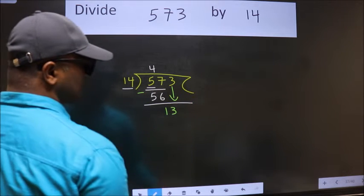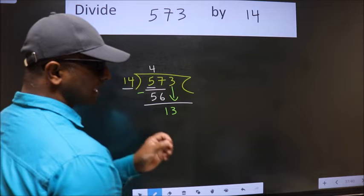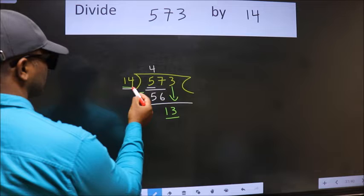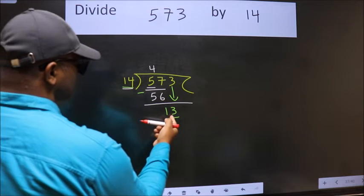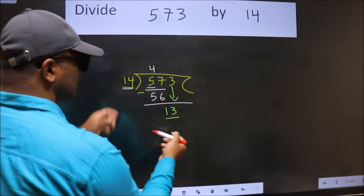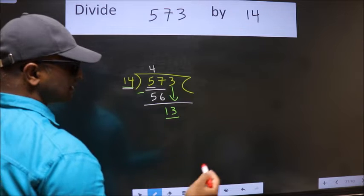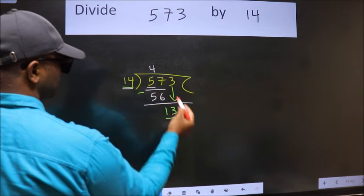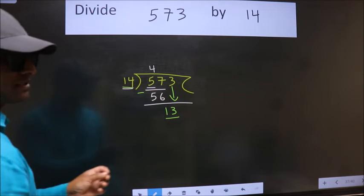After this step, the mistake happens. And the mistake is this: Here we have 13, here 14. 13 is smaller than 14. So what many do is they directly put dot, take 0. Which is wrong.